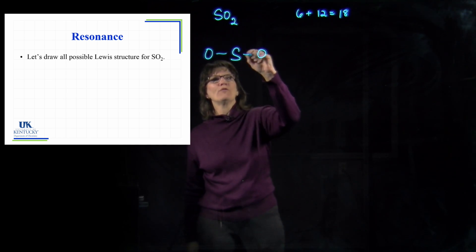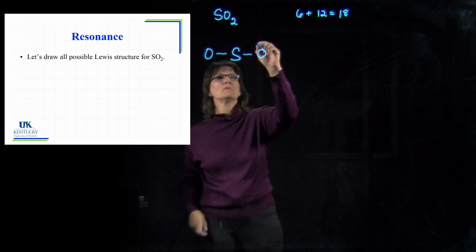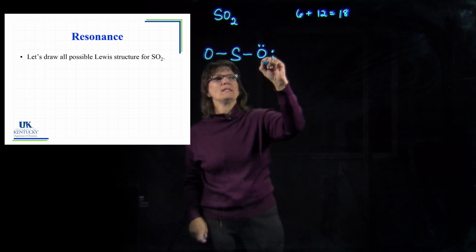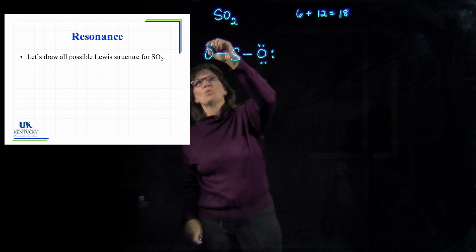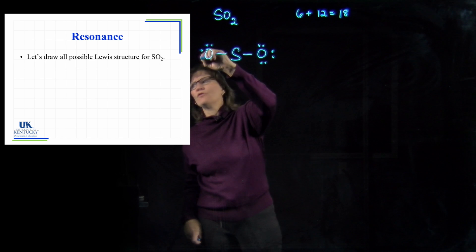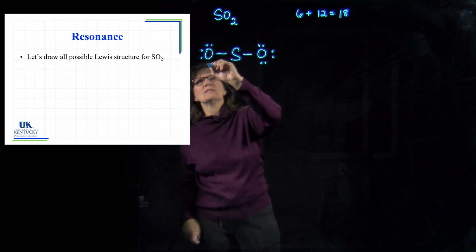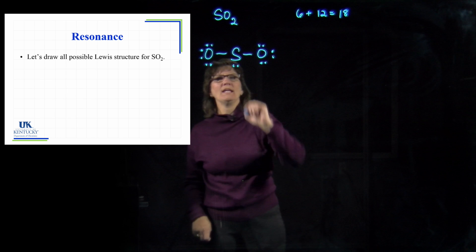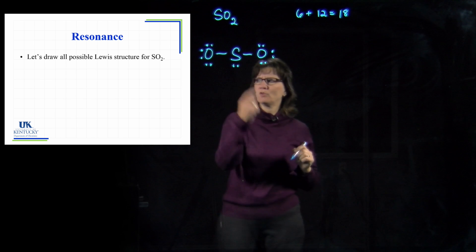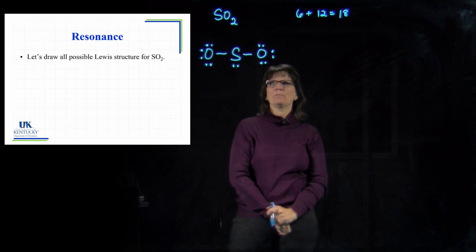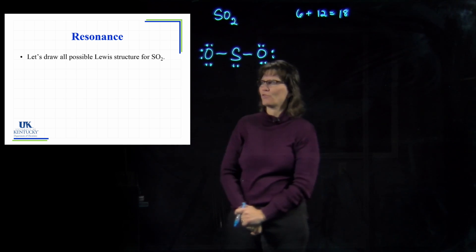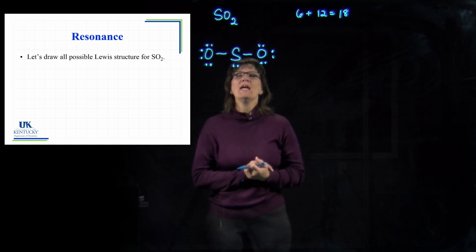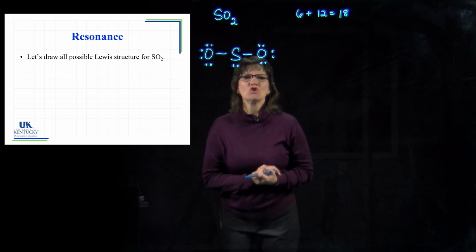We place electrons two at a time, moving to the terminal atoms first: 2, 4, then 6, 8, 10, 12, 14, 16 — then we need two more on sulfur to reach 18. At this point the sulfur isn't quite happy yet.